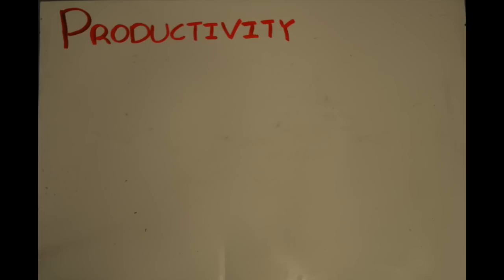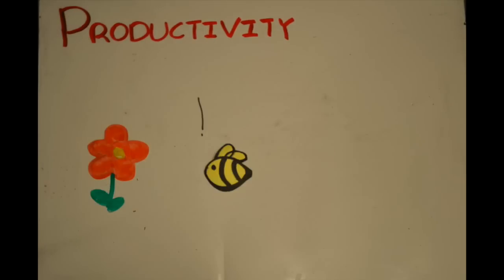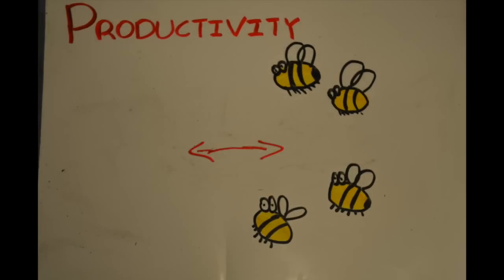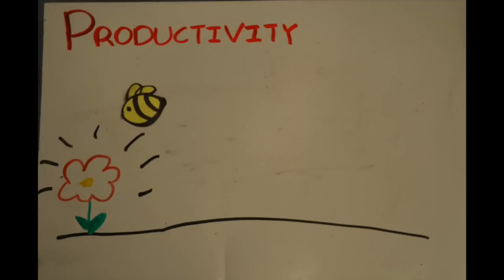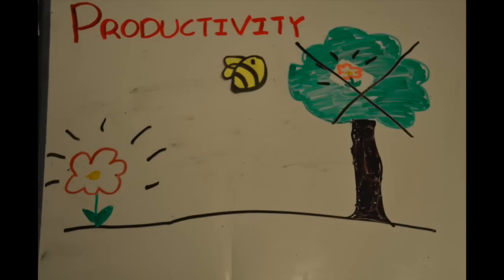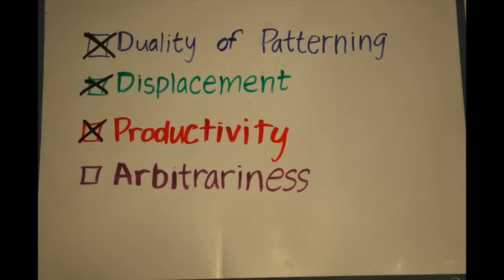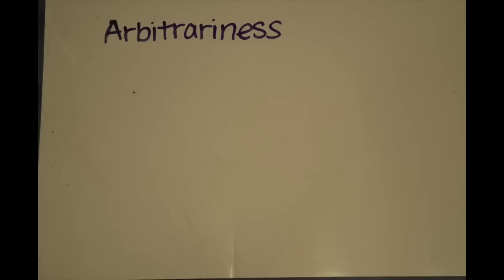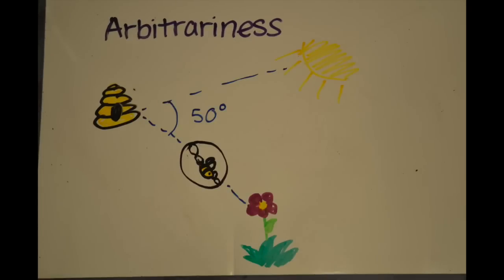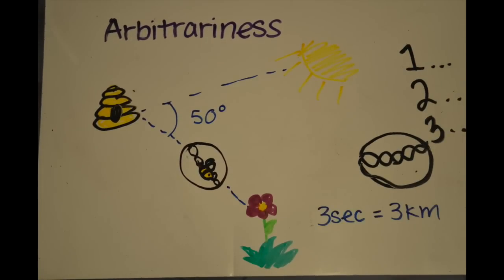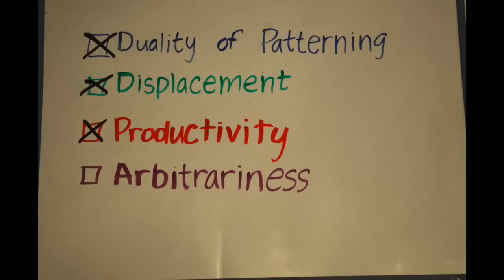Bees are limited by the small set of movements that they know. Generally, their food sources are the flowers on the ground, which is why bees can only communicate horizontal distances. When a nectar source was placed above the beehive, the bees didn't know how to explain, "Hey guys, look up!" Because bees are limited in what they can communicate, they do not display productivity. When bees perform the waggle dance, the dance as a whole looks exactly like the message they're trying to convey — the food source is 50 degrees from the sun and is 3 kilometers away. This means that bee communication is not arbitrary.